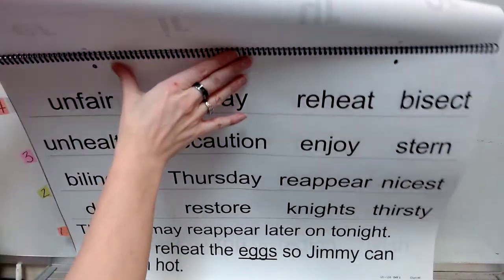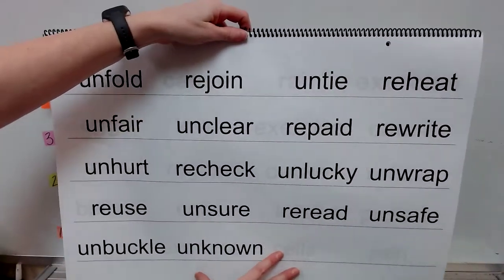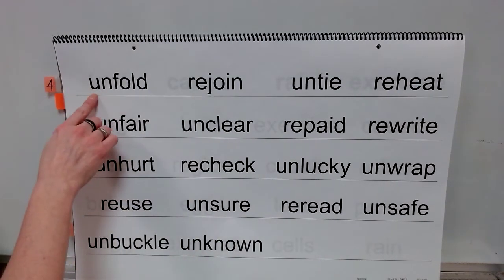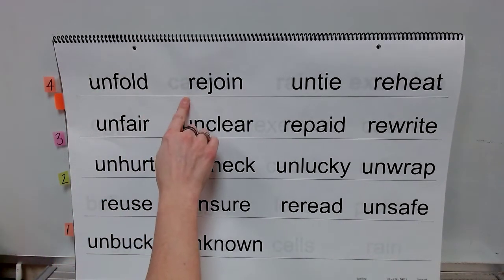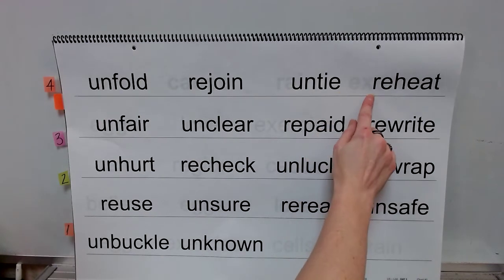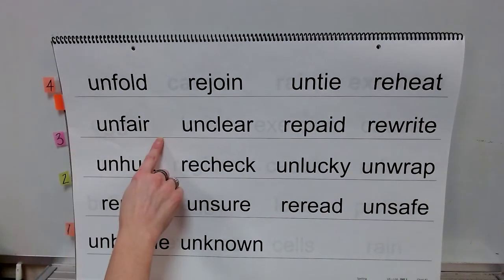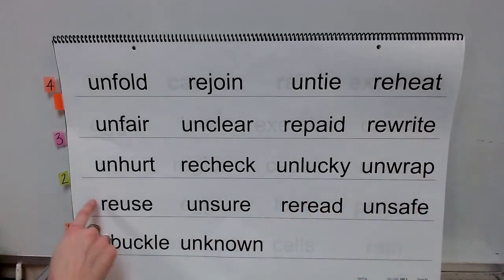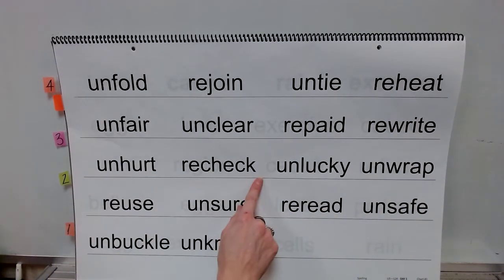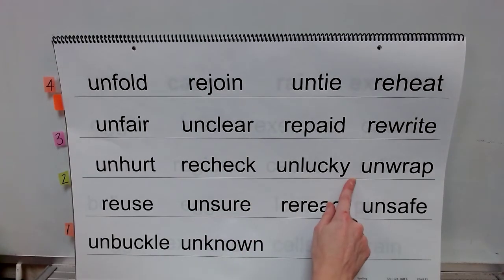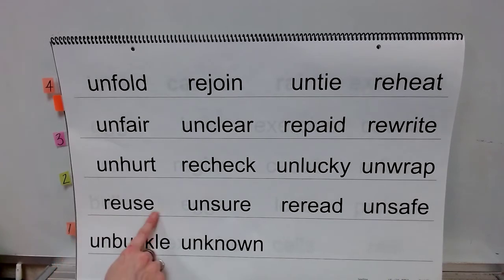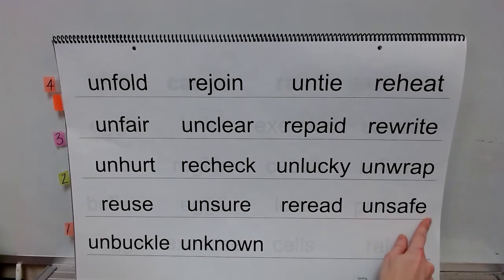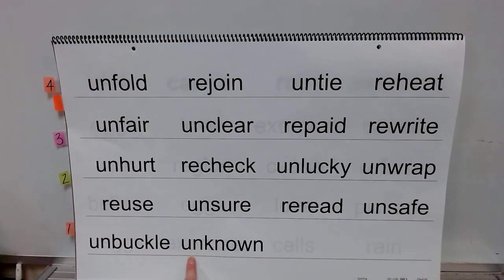Now pause the video to get your supplies ready to practice your spelling. Our spelling words this week all add a prefix to a base word. Let's read these words: unfold, rejoin, untie, reheat, unfair, unclear, repaid, rewrite, unhurt, recheck, unlucky, unwrap, reuse, unsure, reread, unsafe, unbuckle, unknown.